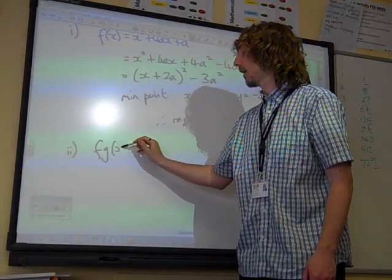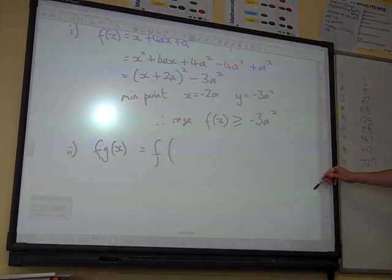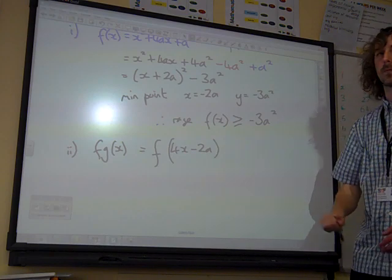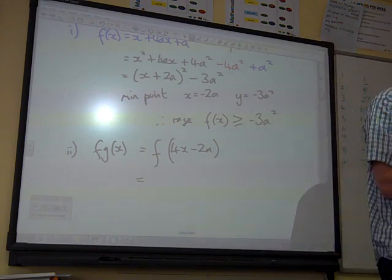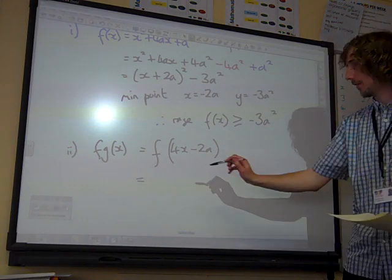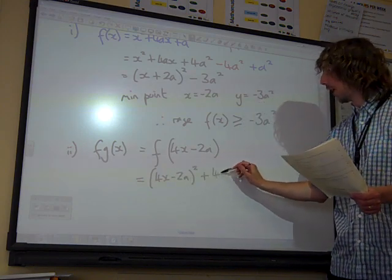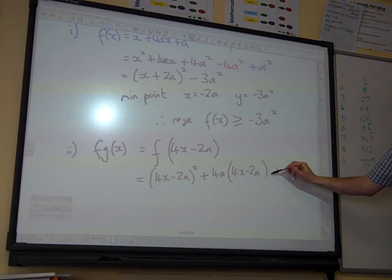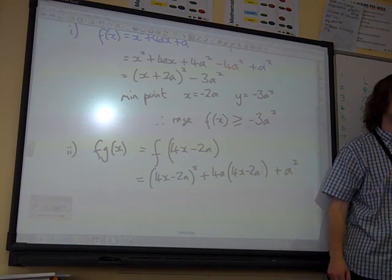f of g of x, that means f of g of x, and g of x was 4x minus 2a. And f says you take your input and you square it, and then you add 4a times your input, and then you add a squared. So that, not particularly nicely factorised or sorted out function, is f of g of x.